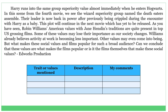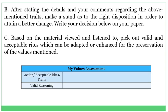Now, you're going to fill out this table with the trait or values mentioned in the material, the description, and also your comments. Letter B: After stating the details and your comments regarding the above-mentioned traits, make a stand as to the right disposition in order to attain a better change. Write your decision below on your paper. Letter C: Based on the material viewed and listened to, pick up valid and acceptable traits which can be adopted or enhanced for the preservation of the values mentioned — values assessed, action, acceptable traits, and valid reasoning.